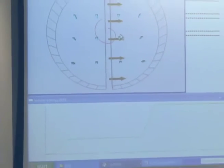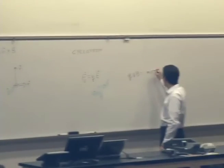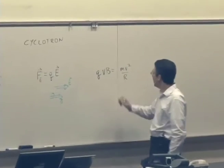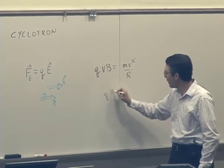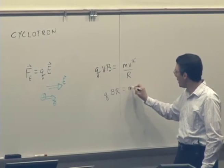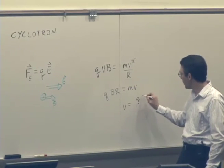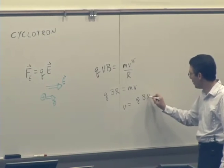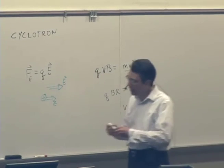It increases the speed, and we saw last time, we worked out how QVB equal to MV squared over R. And so there was a relationship between the speed and the radius. So V we could calculate as equal to QBR over the mass of the particle. The faster it's moving, the bigger the radius it's going to get.